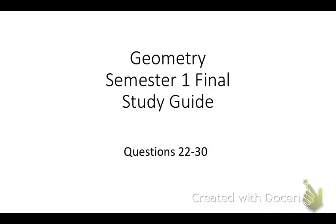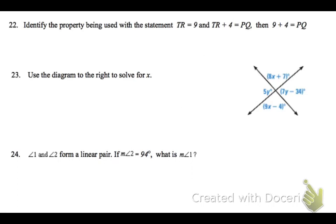Okay, for questions 22 through 30, on 22, when you look at the three statements that you have, 9 is going in for TR in the second statement to create the third statement, and that's the substitution property.